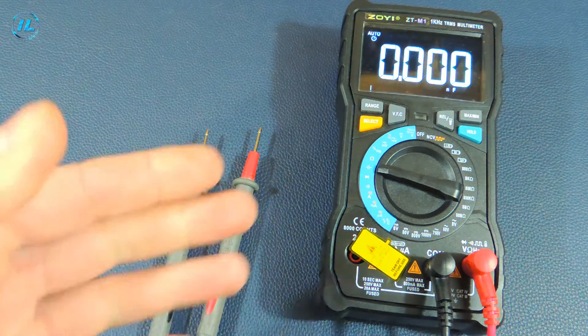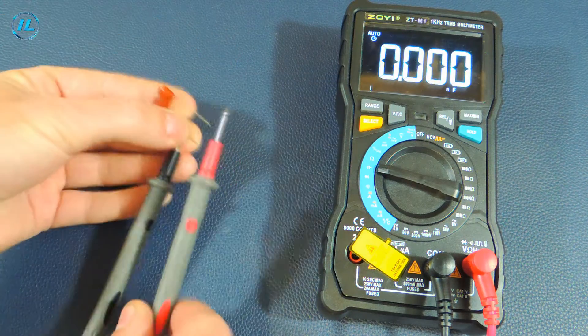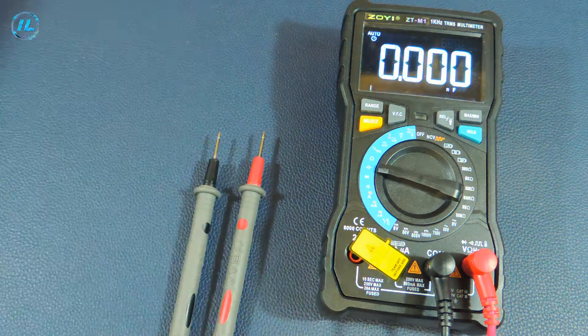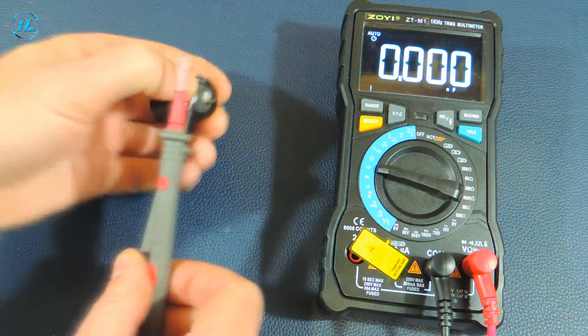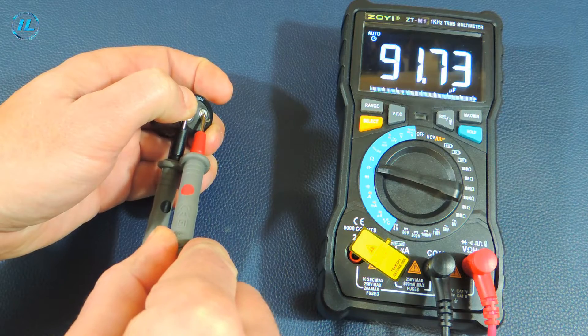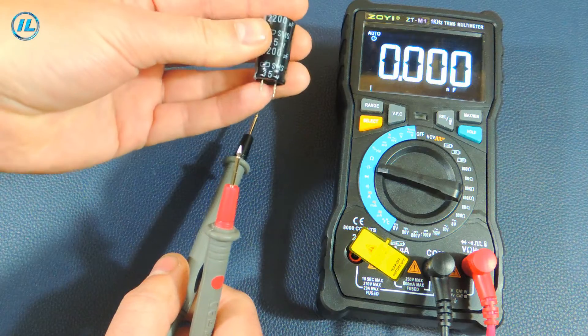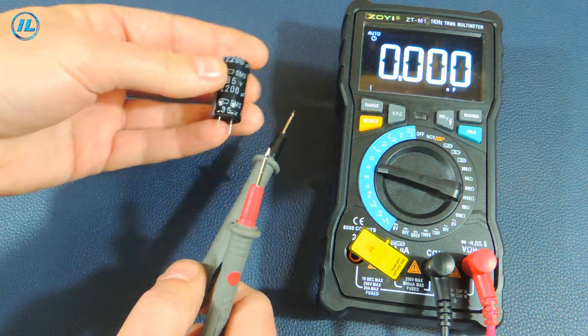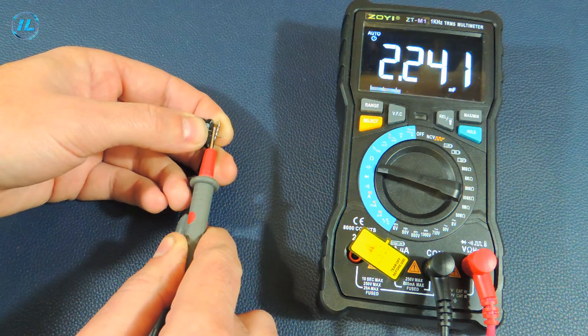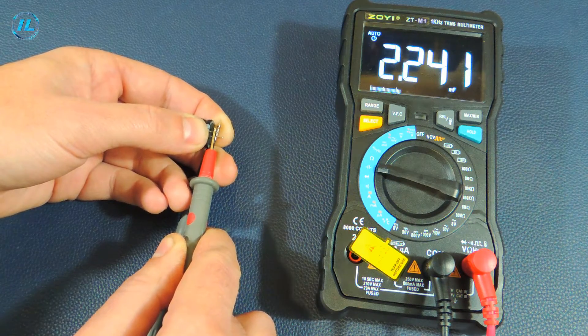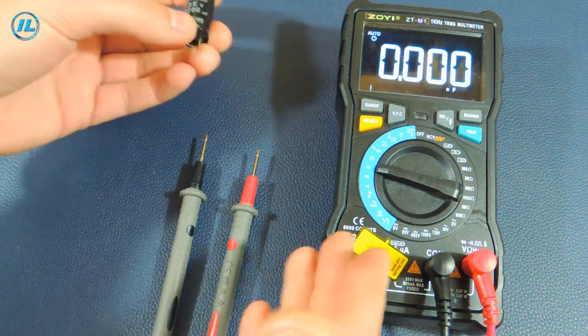The next position of the switch is to check the capacity. A 10 nanofarad capacitor: exactly 10 nanofarads. Great. Electrolytic capacitor for 100 microfarads: the multimeter shows 91 microfarads. Another 2200 microfarad capacitor: the result is 2240 microfarads. It took about 5 seconds for the multimeter to measure such a capacity.